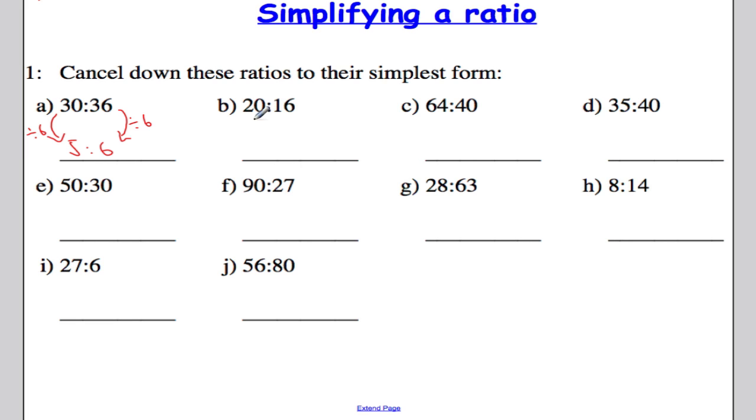Now, let's have a look at the second one here. We have 20 to 16. Now I've got to think, what is the biggest number I can divide into 20 and divide into 16? So what is the highest common factor of 20 and 16?